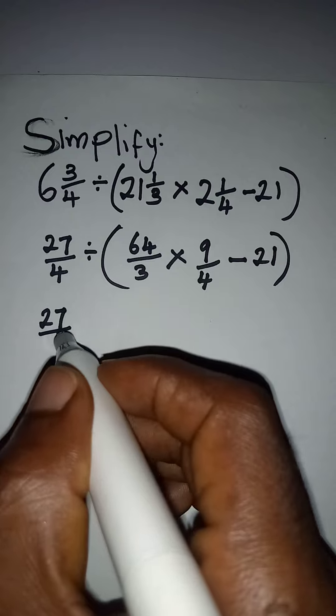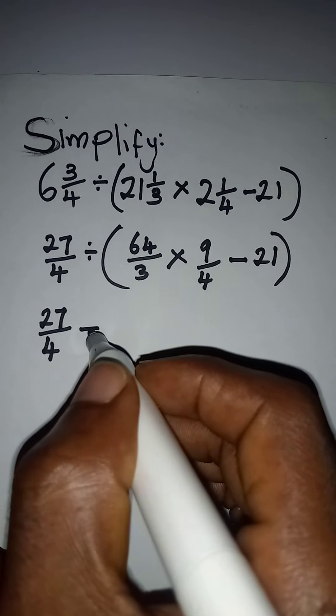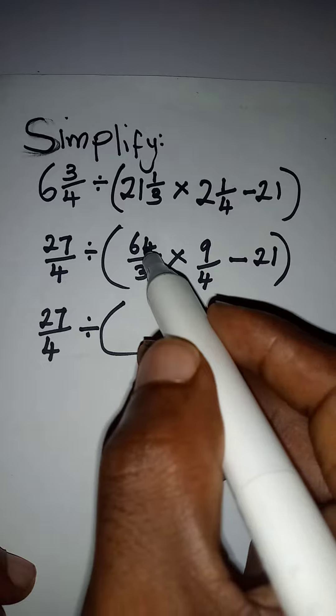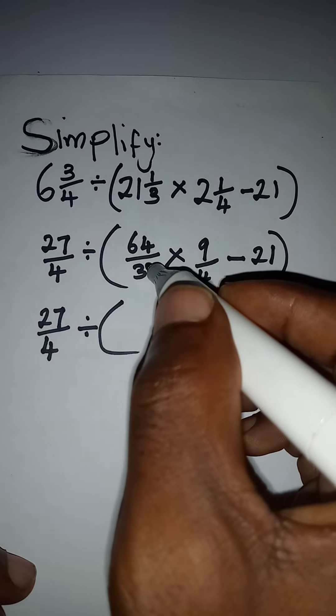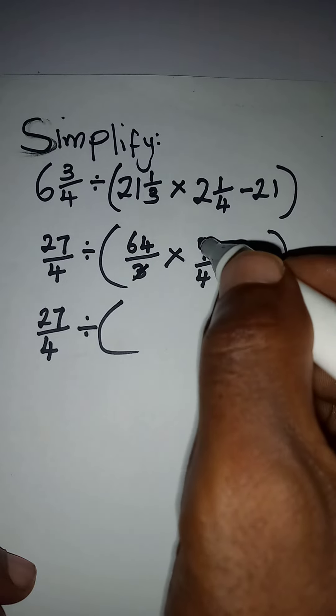27 over 4, then multiply by open bracket. I will deal with what I have in the bracket because 3 can go here,